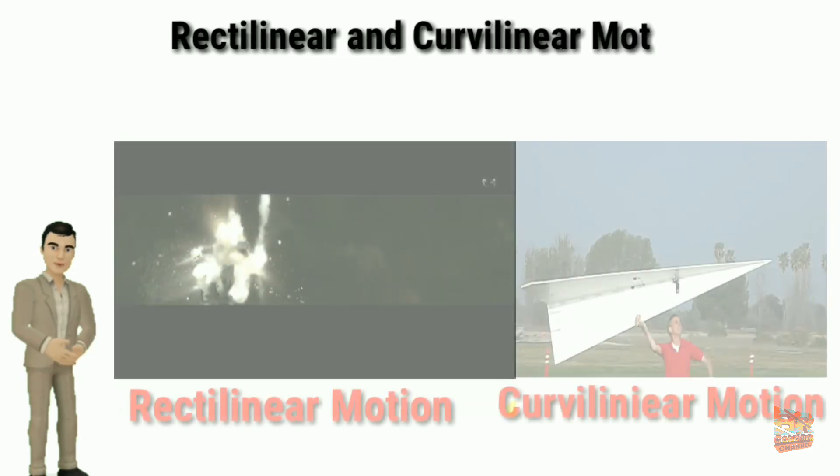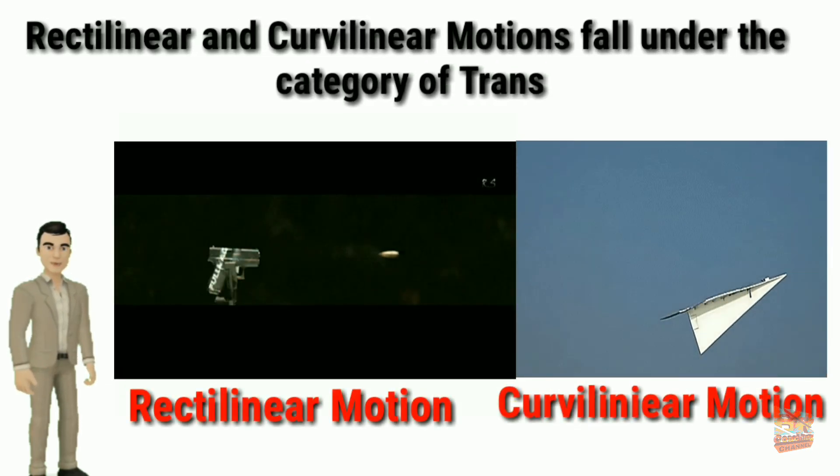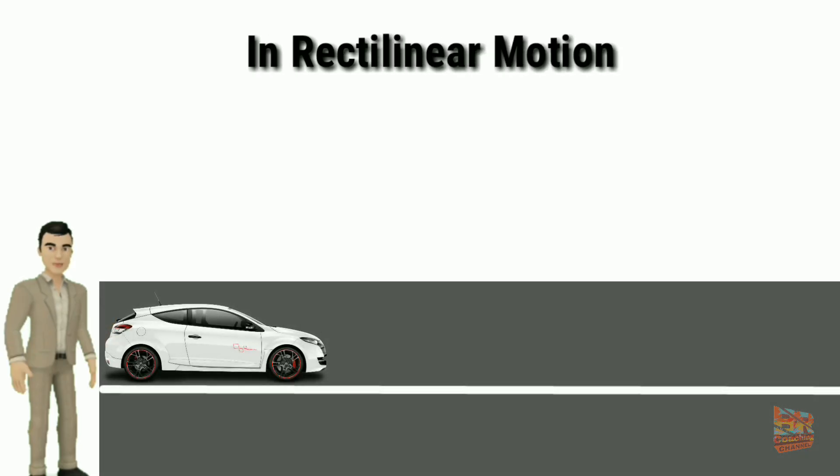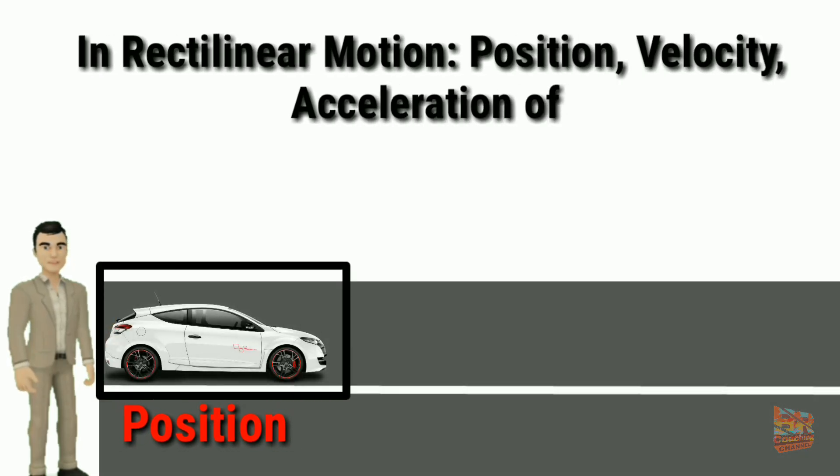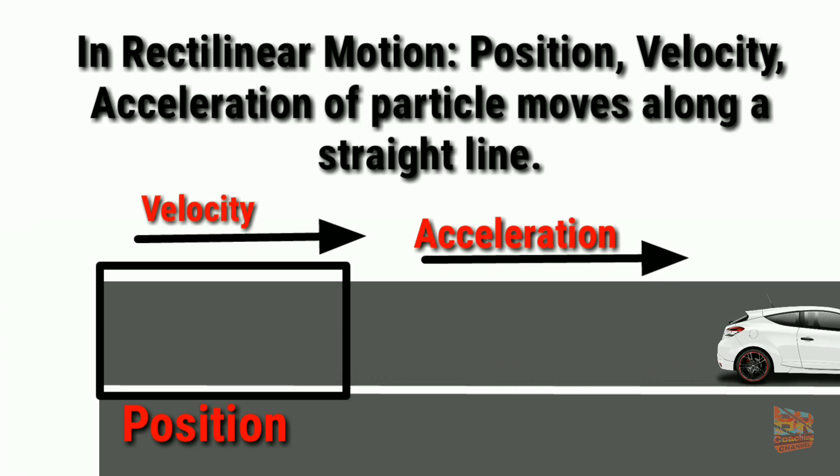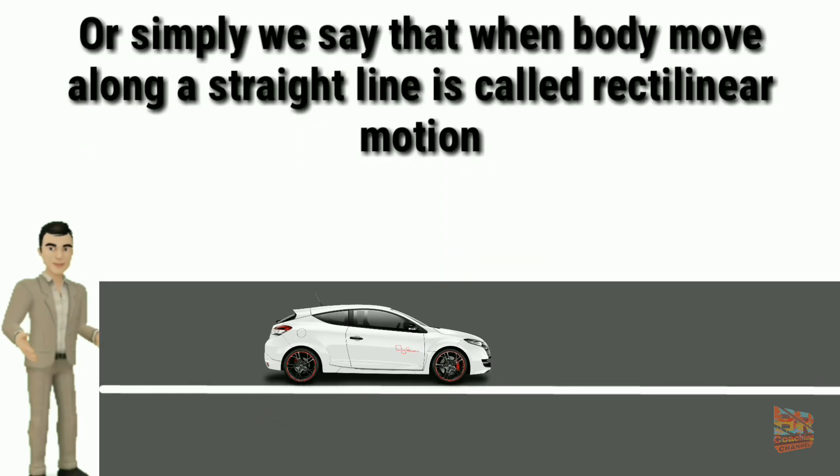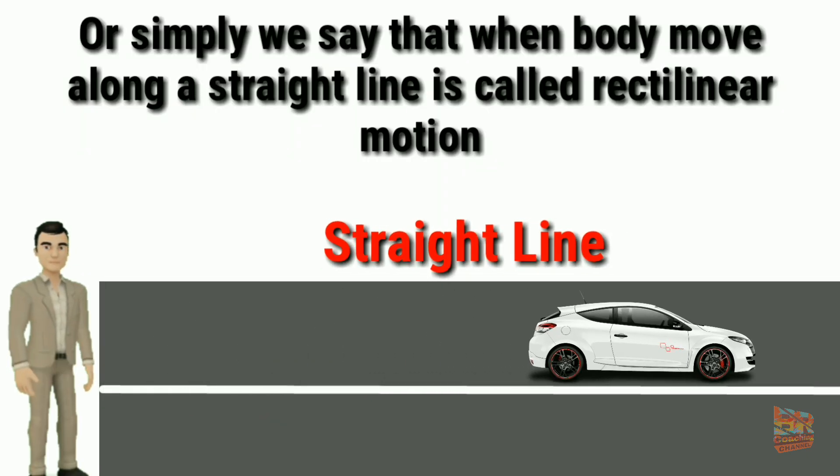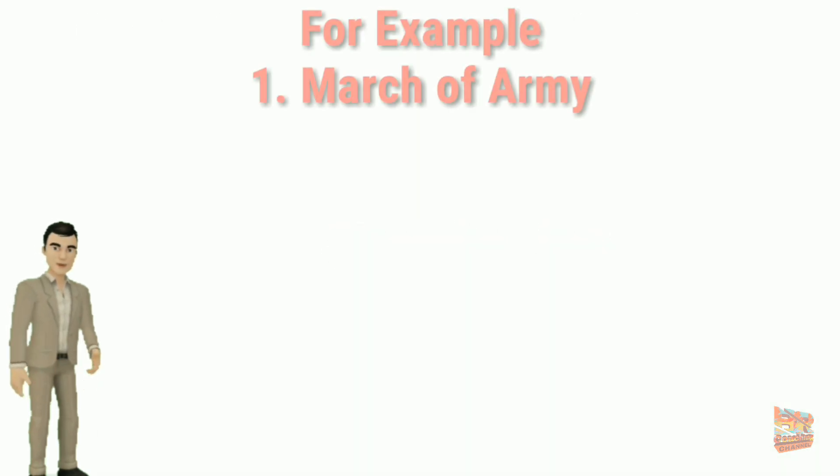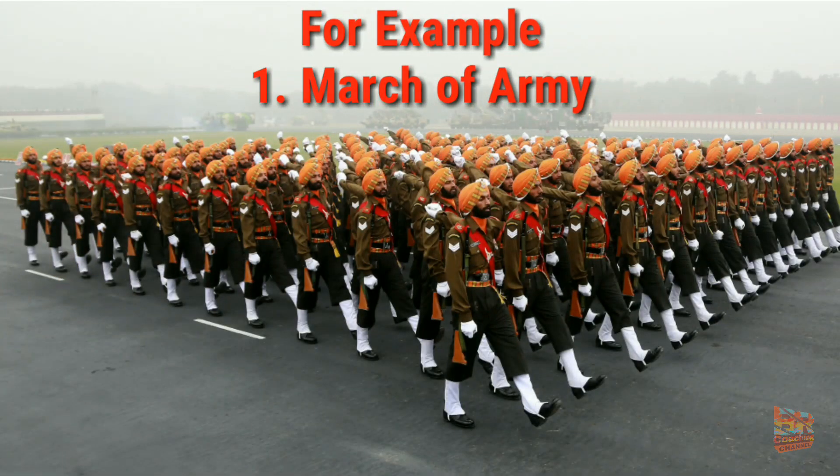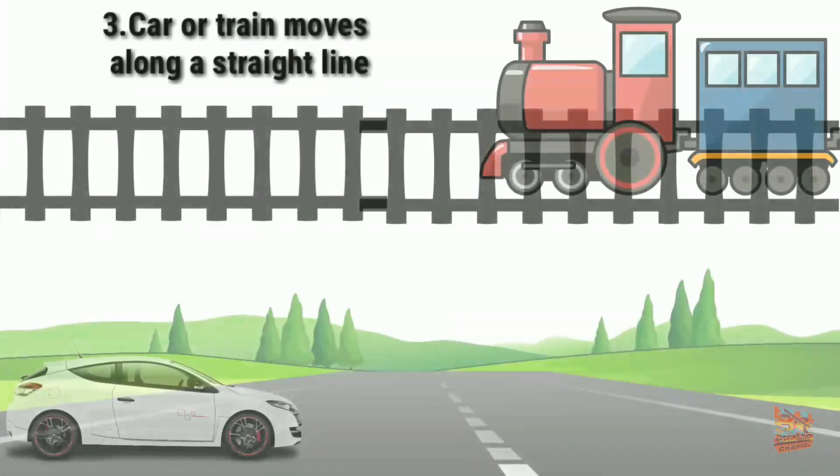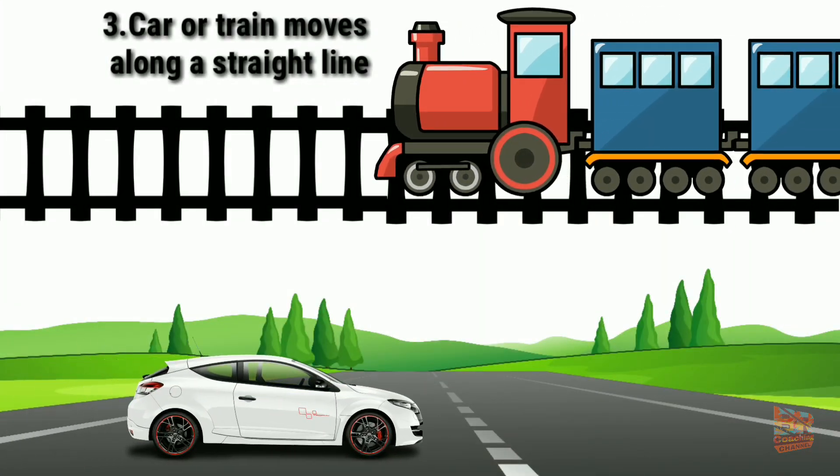Rectilinear and curvilinear motions fall under the category of translational motion. In rectilinear motion, position, velocity, and acceleration of particle move along a straight line. Or simply we say that when a body moves along a straight line it is called rectilinear motion. For example, march past of army, elevator, car or train moving along a straight line.